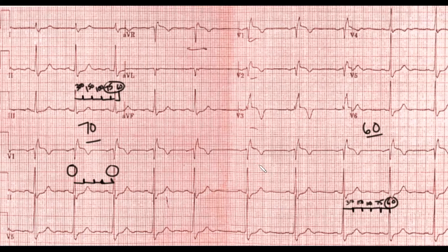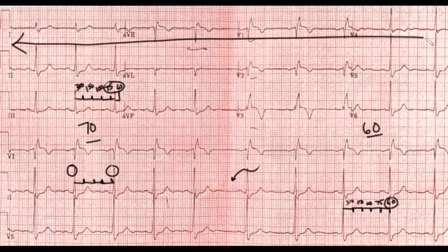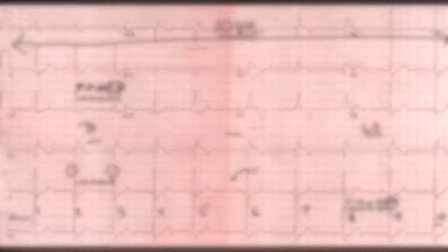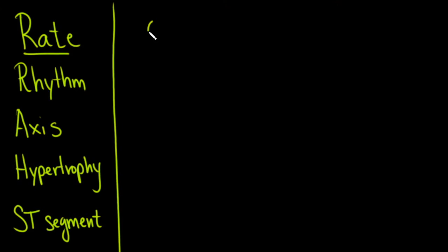It looks as though something happened right about here, where there was a change. Remember the entire strip is about 10 seconds. If we count the QRS complexes — one through ten — and multiply by six, we get just over 60. So the rate is somewhere between 60 and 70 beats per minute.